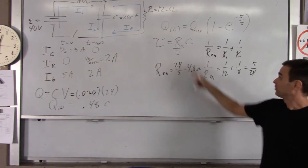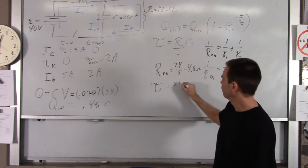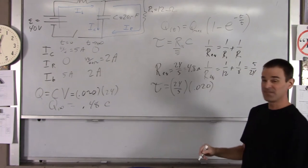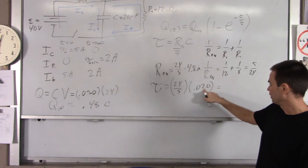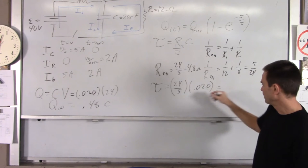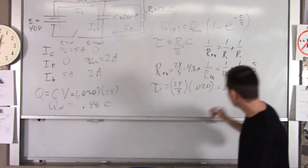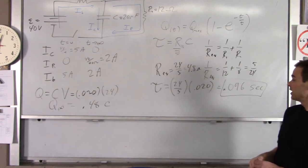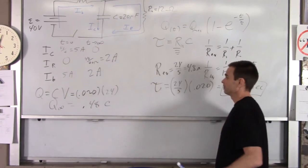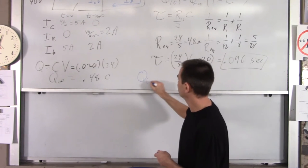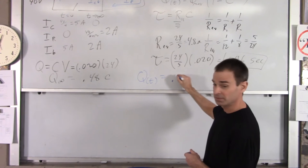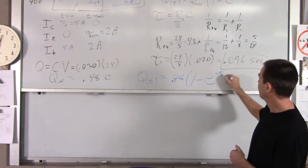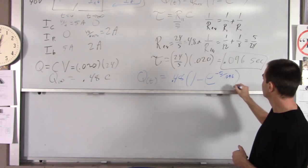Tau is R_eq times C = (24/5) × 0.020 = 0.096 seconds. That's our tau. So Q as a function of time is Q(t) = 0.48 × (1 − e^(−t/0.096)) coulombs.